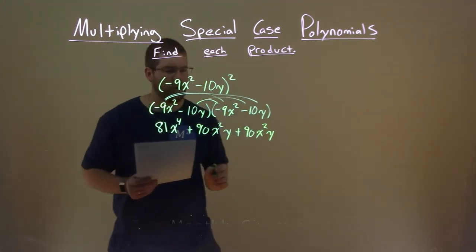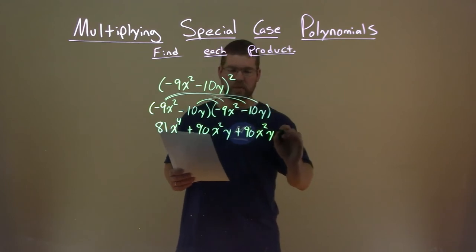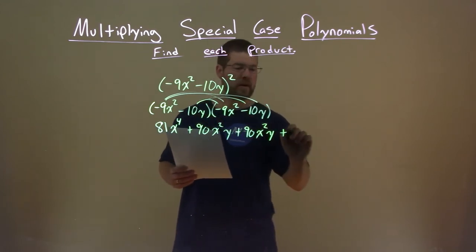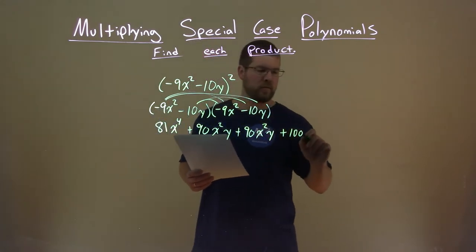Lastly, we have negative 10y times negative 10y. Two negatives, again, make a positive with multiplication. 10 times 10 is 100, keep it 100, everyone. And y times y is y squared.